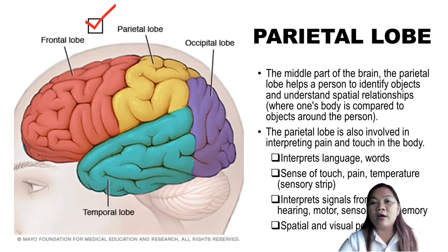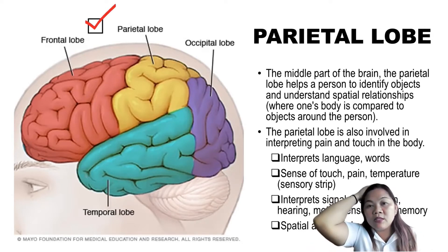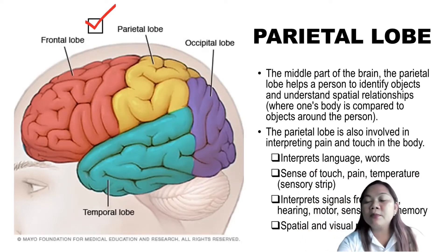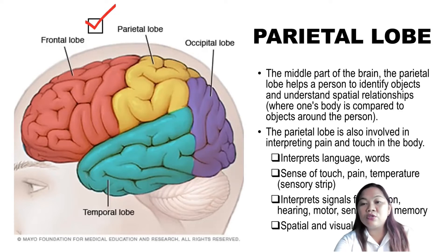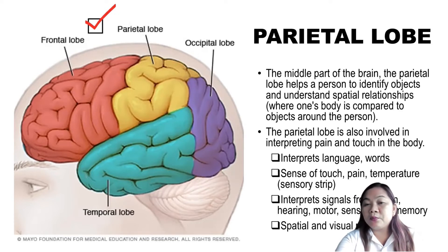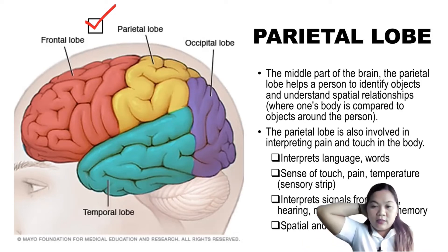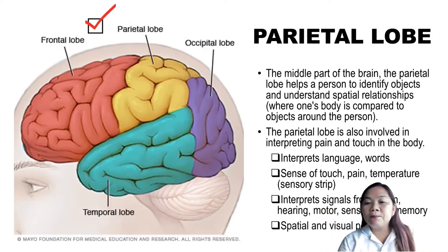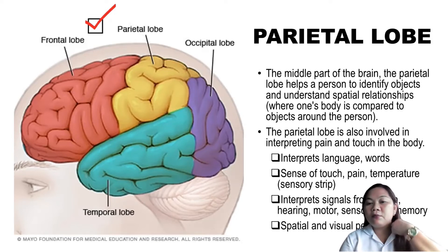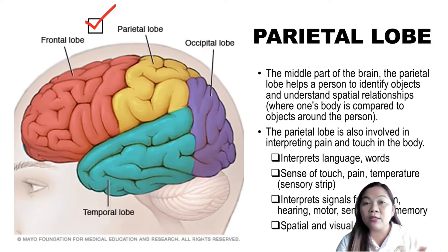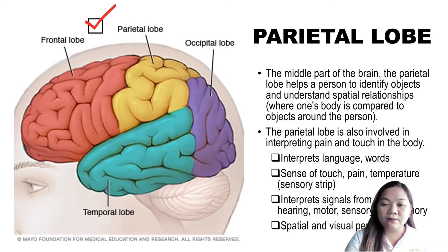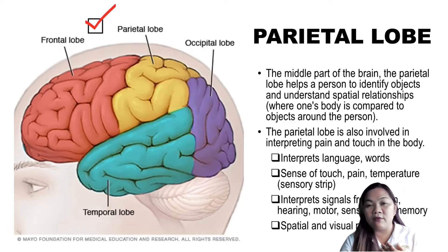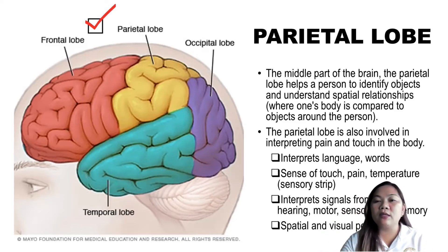Then we also have the parietal lobe, located at the middle portion of our brain. It helps a person identify objects and understand spatial relationships — where one's body is compared to objects around the person. Our parietal lobe is also involved in interpreting pain and touch in the body, and is responsible for interpreting language, words, sense of touch, pain, temperature, vision, hearing, motor, sensory, memory, spatial, and visual perception.